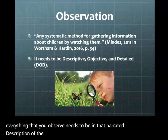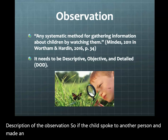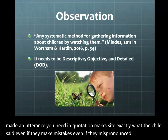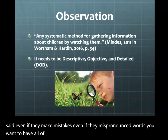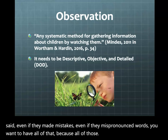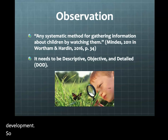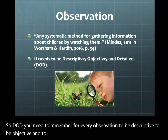For example, if the child spoke to another person and made an utterance, you need to, in quotation marks, cite exactly what the child said — even if they made mistakes or mispronounced words — because all of those details give you information about the child's development. So remember DOD: every observation needs to be Descriptive, Objective, and Detailed.